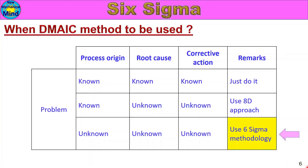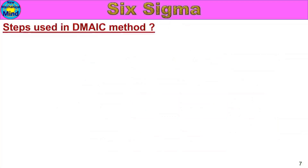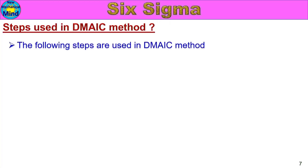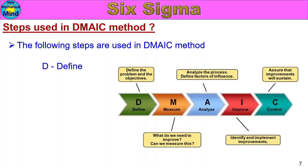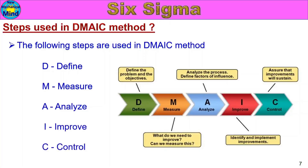Now, let's look at the steps used in the DMAIC method. The following five steps are used: Define, Measure, Analyze, Improve, and Control.